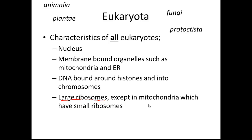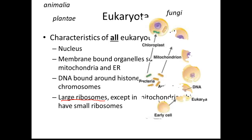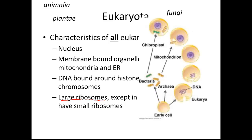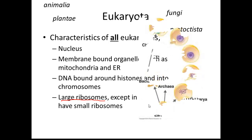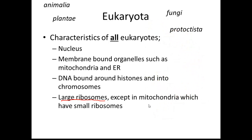Both of these last two points — small ribosomes and non-histone-bound DNA in mitochondria — suggest that possibly mitochondria used to be prokaryotes which were absorbed into a eukaryotic cell, and still retain some prokaryotic features as a consequence. So we have four eukaryotic kingdoms: Animalia, Plantae, Fungi, and Protoctista, and we will look at them now.